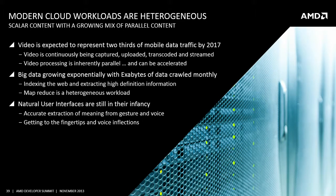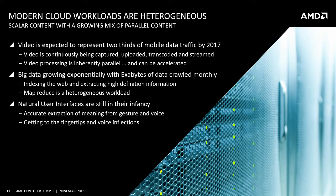Big data is growing exponentially — exabytes of data crawled monthly. Indexing the web and extracting high-definition content and information from big data is a parallel, heterogeneous workload. MapReduce is itself a heterogeneous workload: the map portion is incredibly parallel, and even the reduction operations have scope for parallel acceleration. Natural user interfaces are still in their infancy.